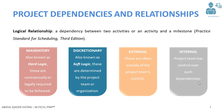Dependency has four types: the first one is mandatory, the second one is discretionary, the third one is external, and the last one is internal.